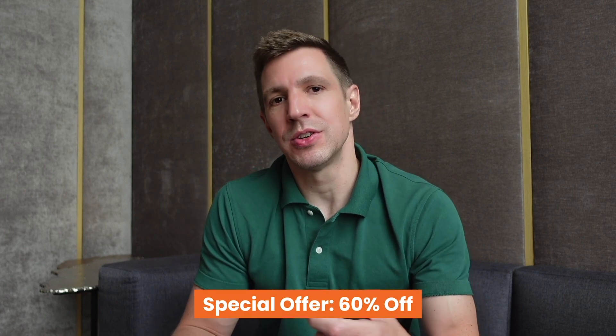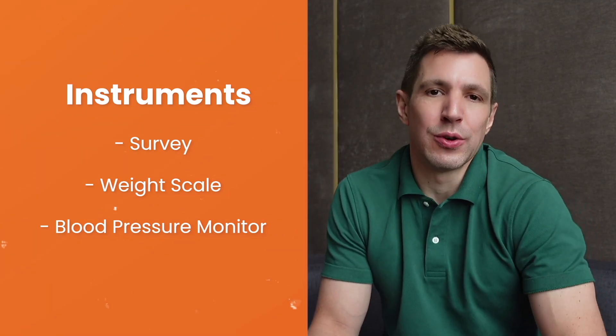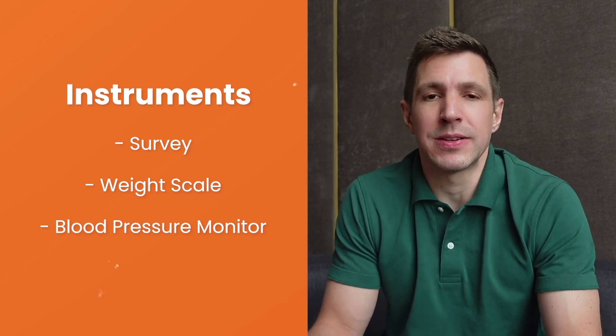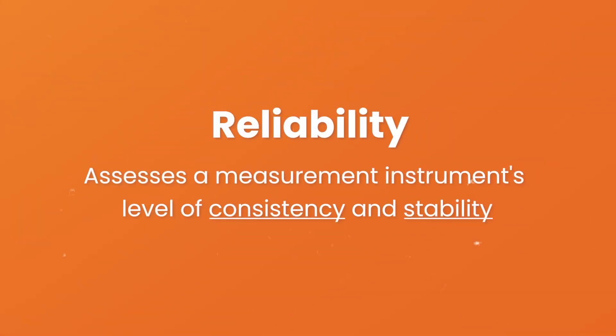Remember, you can take advantage of our 60% discount offer using the link in the description. Next up, let's look at reliability. As with validity, reliability is an attribute of a measurement instrument — for example, a survey, a weight scale, or even a blood pressure monitor. While validity is concerned with whether the instrument is measuring what it's supposed to measure, reliability is concerned with the consistency and stability of that measurement.